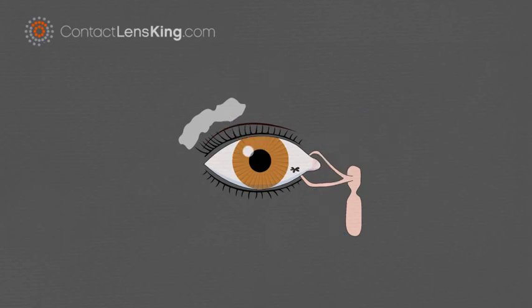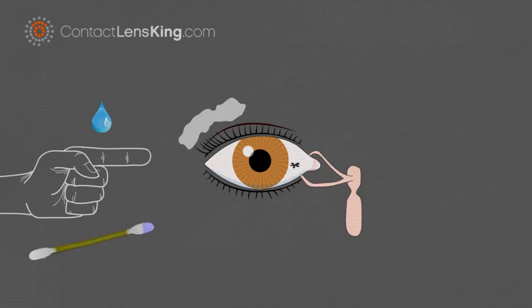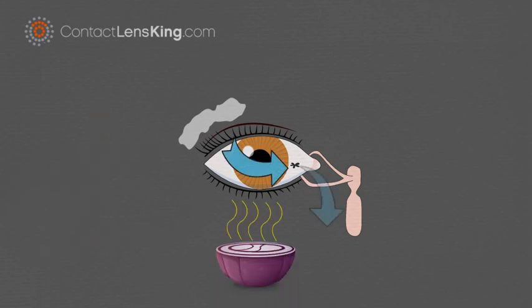In the instance foreign debris becomes lodged on the eye, before trying to remove it by introducing additional foreign objects to the eye, such as saline solution, fingers or q-tips, try cutting an onion to stimulate tears, and help flush the debris away naturally.